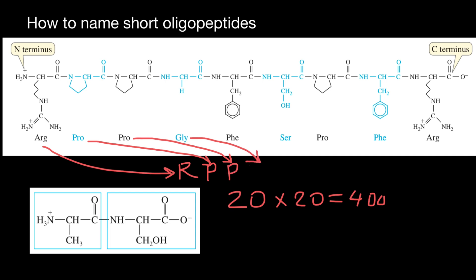Glycine is going to be G. And phenylalanine is going to be F. Serine is going to be S, one-letter abbreviation. Proline is going to be P, one-letter abbreviation. Phenylalanine is going to be F. And arginine is going to be R. So this is going to be one-letter abbreviation of this polypeptide or oligopeptide.